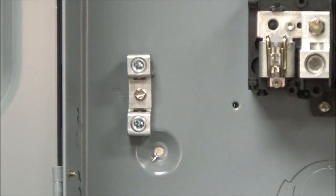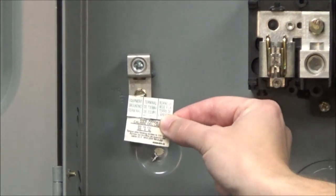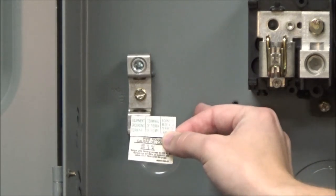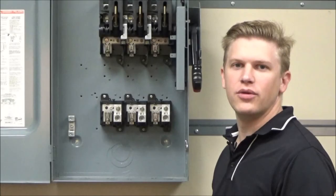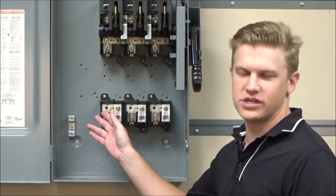Once you have the ground kit installed, you will then add the two labels to the switch near the ground kit. You now have your PKO GTA2 ground kit installed in your safety switch.